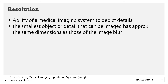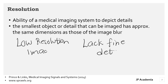The structures in the human body vary not only in physical contrast but also in size, ranging from large organs and bones to small features such as trabecular patterns and microcalcifications. Image blur reduces both the contrast and the resolution of the image. The smallest object or detail that can be imaged has approximately the same dimensions as the image blur, and a low resolution image means a lack of fine details.